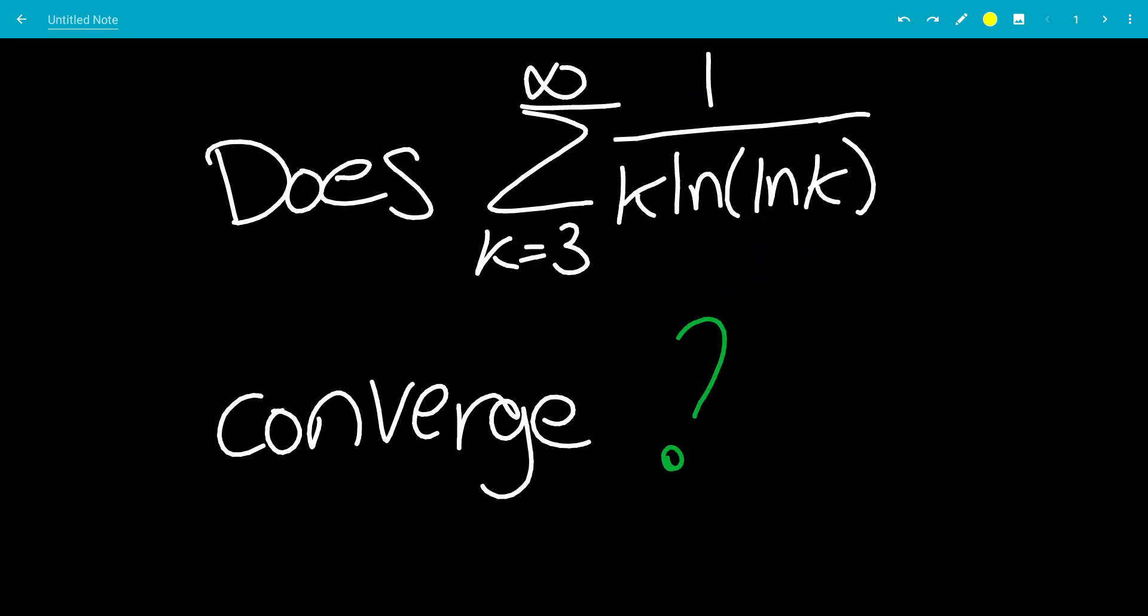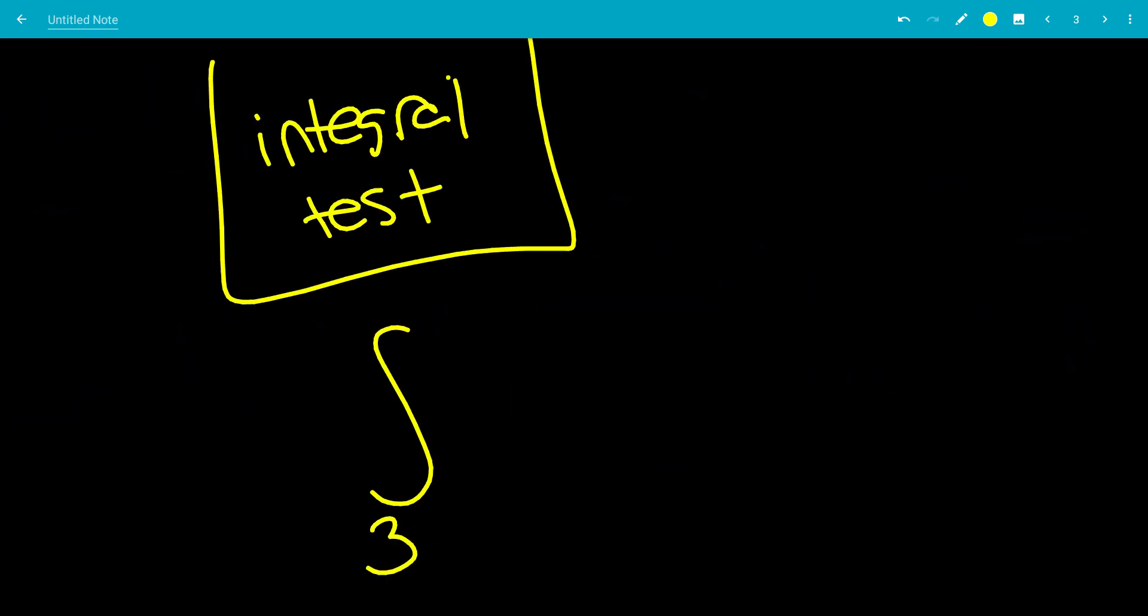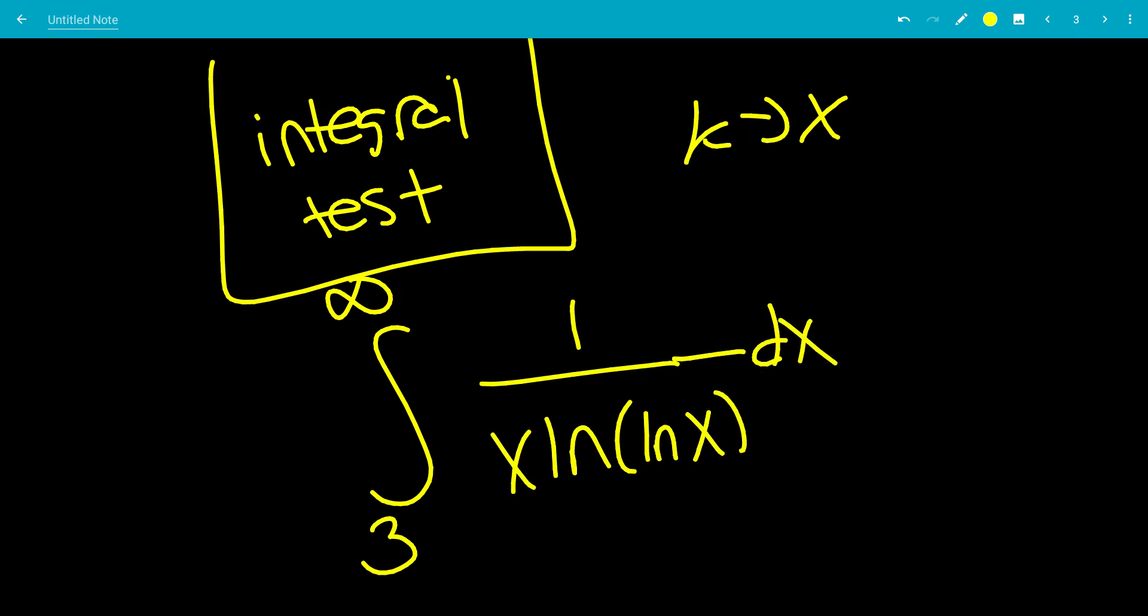So let's do the integral test. The bounds are from 3 to infinity. We'll replace k with x, so k goes to x. So we have 1 over x times ln of ln of x. So we'll see if we can integrate this.